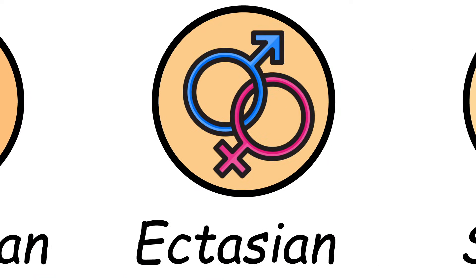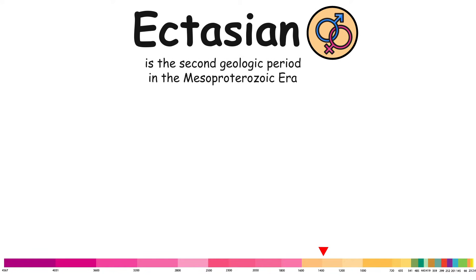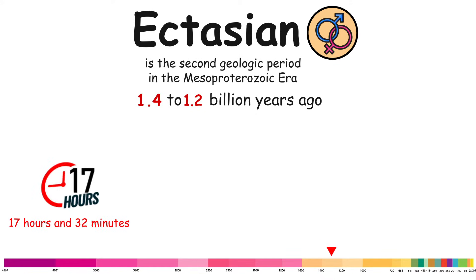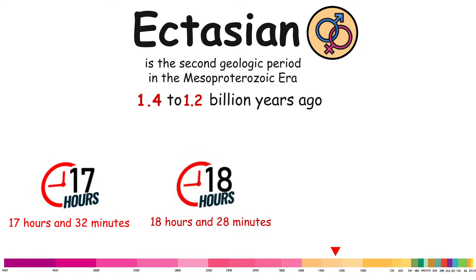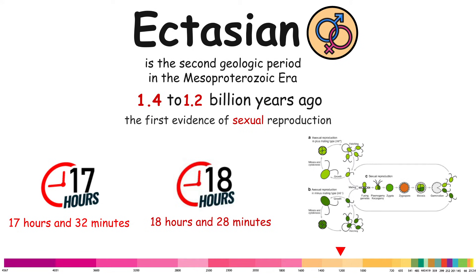Ectasian. The Ectasian is the second geologic period in the Mesoproterozoic era, lasting from 1.4 to 1.2 billion years ago. In the early part of this period, a day was 17 hours and 32 minutes; by the end it was 18 hours and 28 minutes. This period is notable for the first evidence of sexual reproduction.